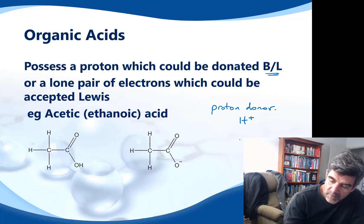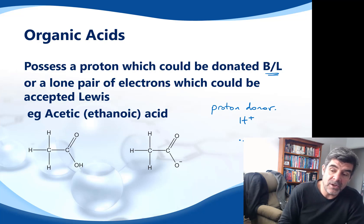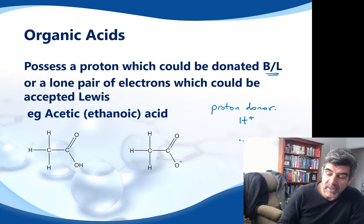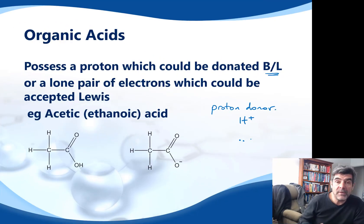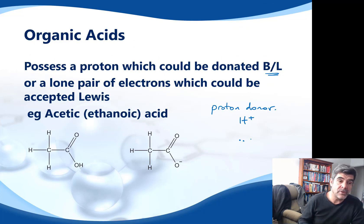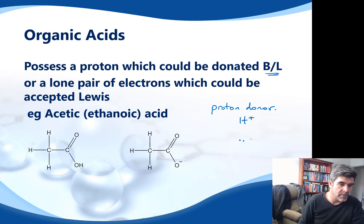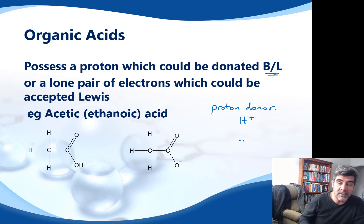A lone pair is two electrons that are not part of a bond but are part of an atom. Where we find that lone pair of electrons on an atom somewhere in the molecule, that gives us some indication of whether or not that particular molecule can act as either an acid or a base. Let's look at one of the most common ones we've covered — acetic or ethanoic acid.